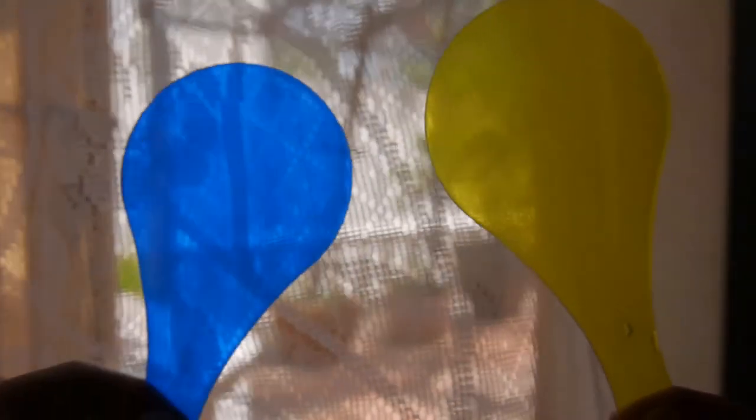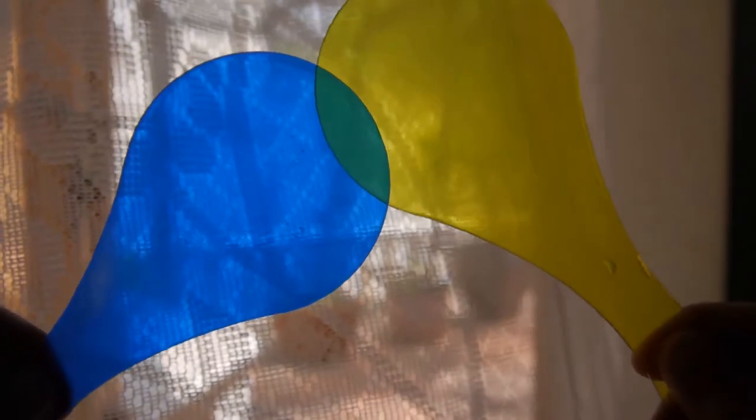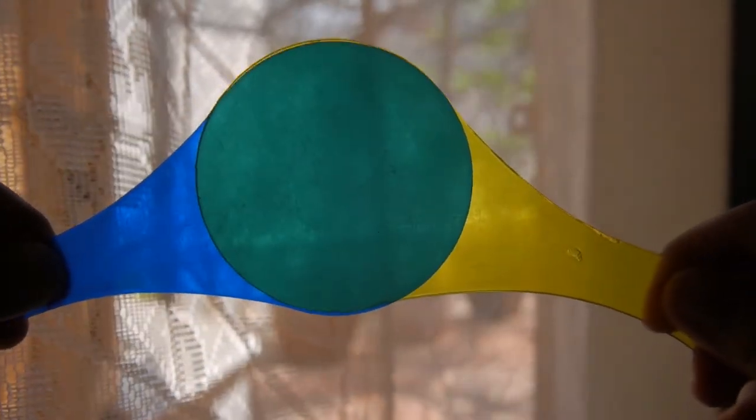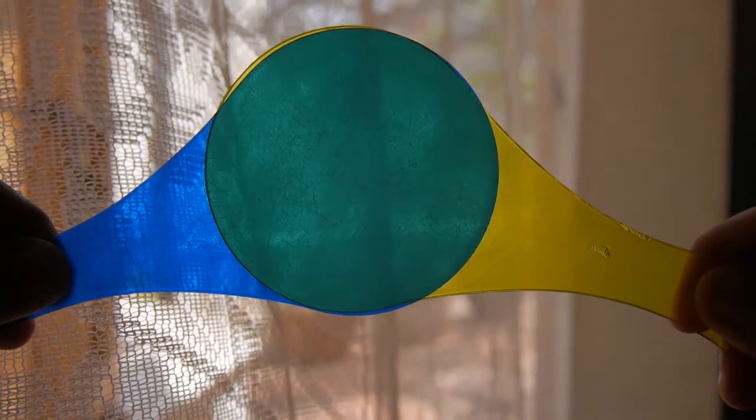Now let's see if you can guess what happens if you have a yellow paddle and a blue paddle. That's right, we get a green color. Yellow plus blue equals green. Green is a secondary color.